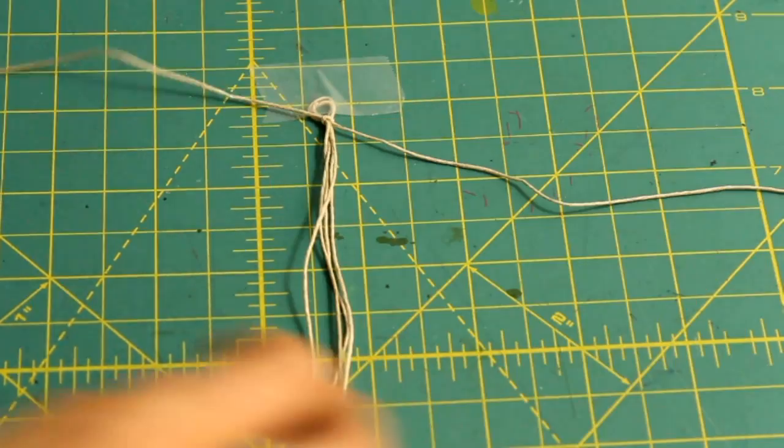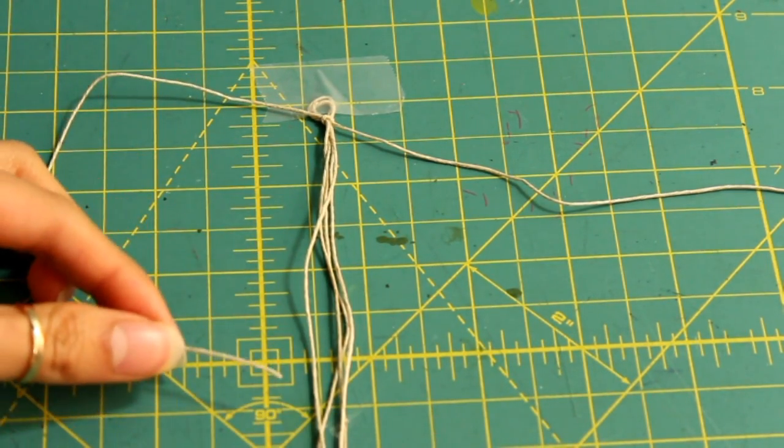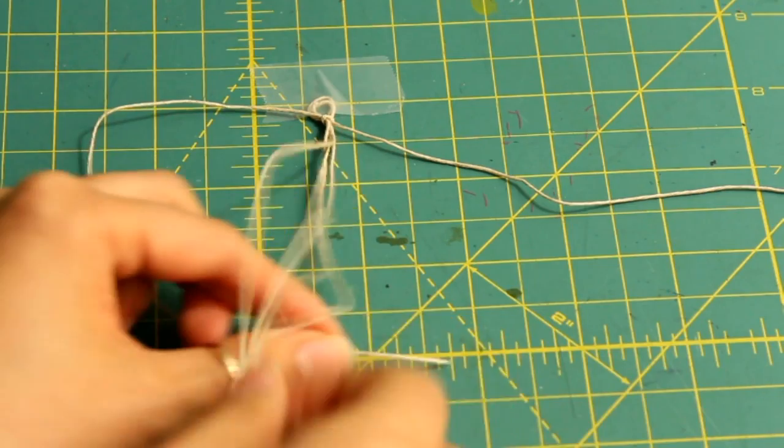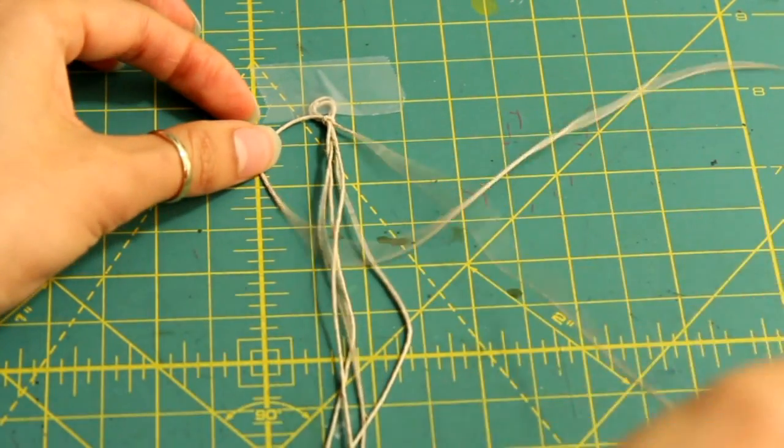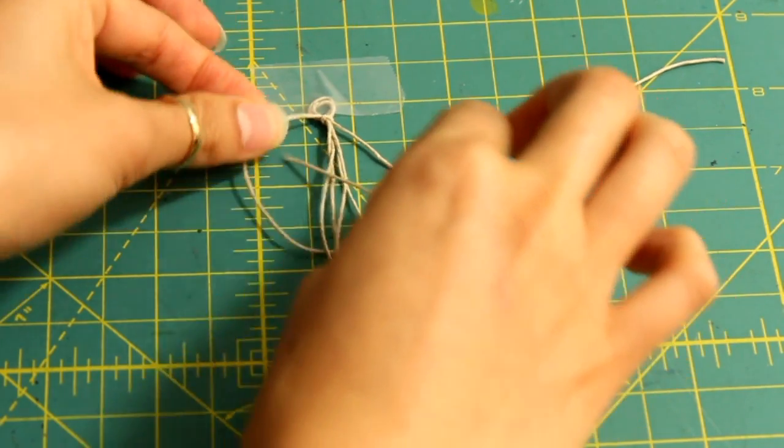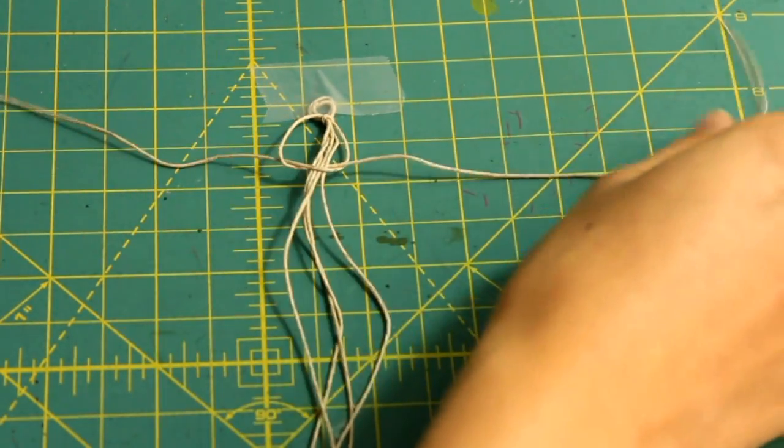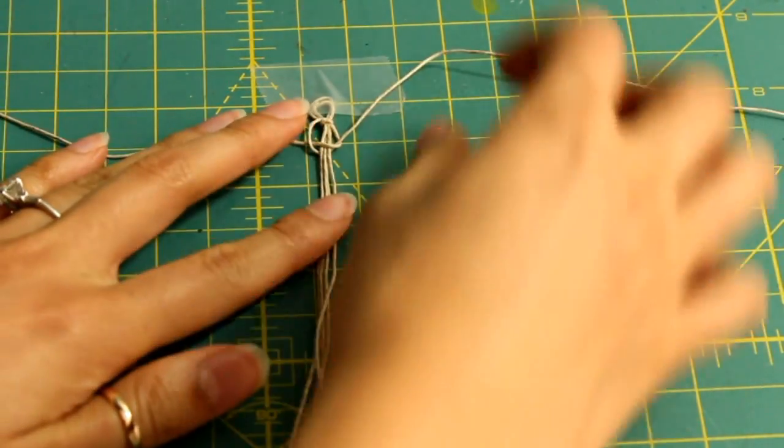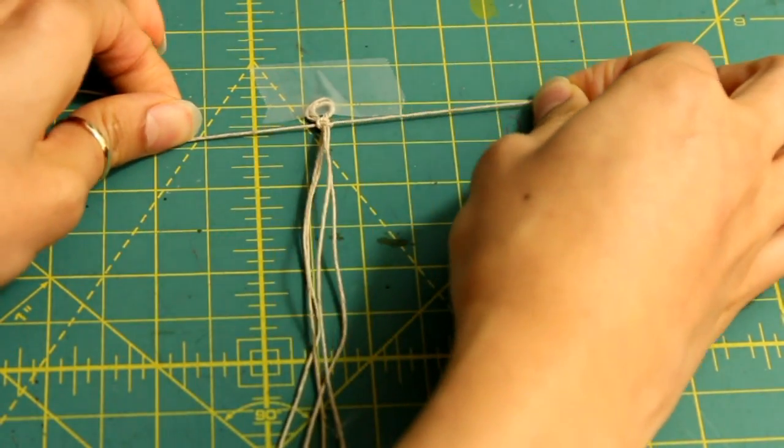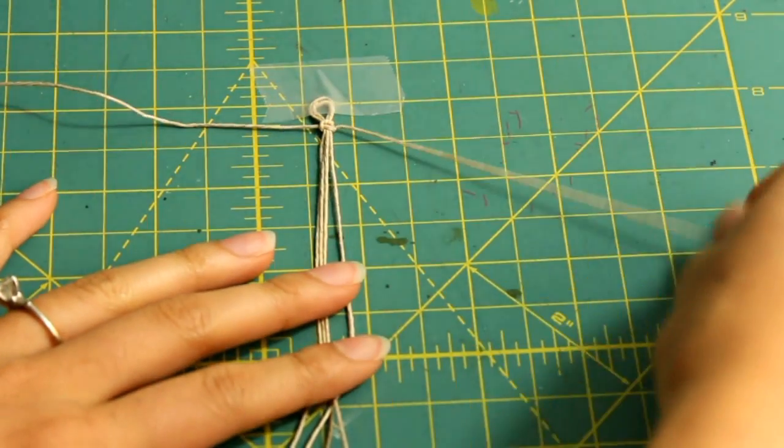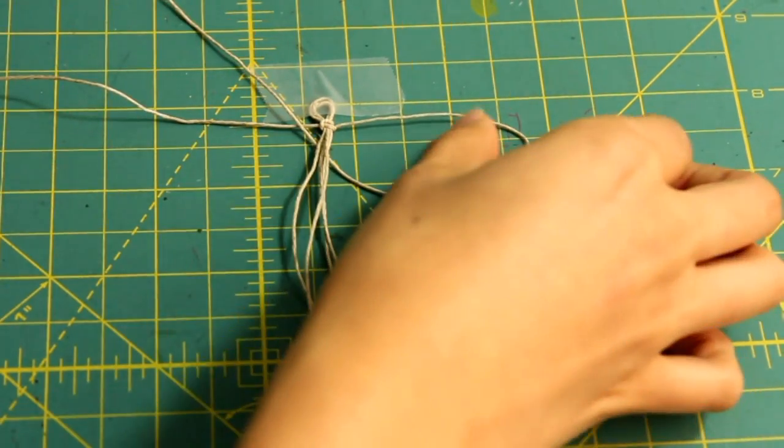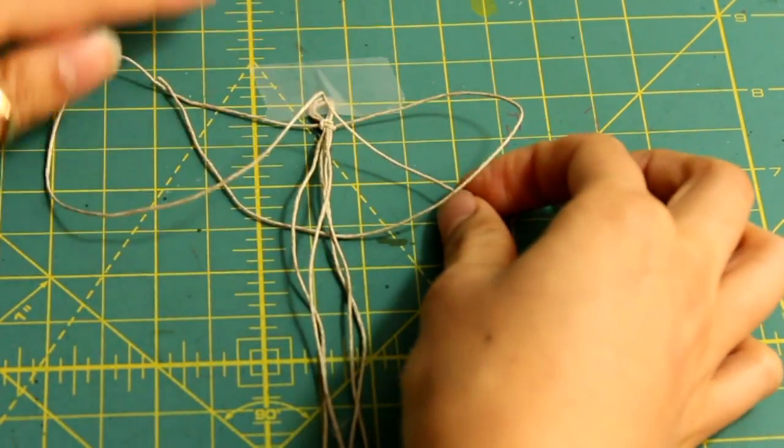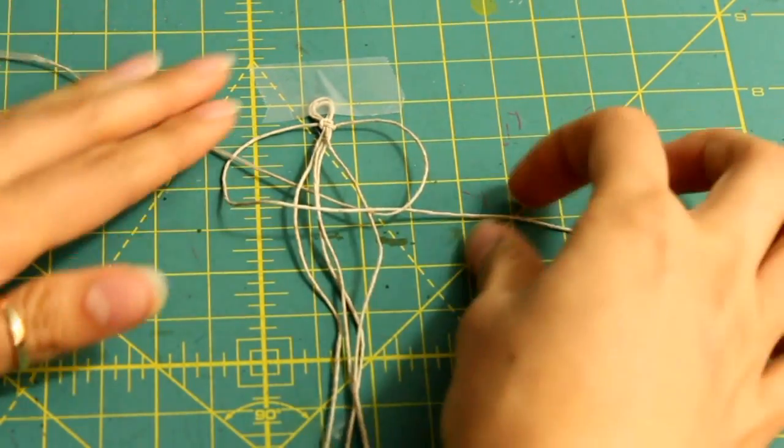Now, the fun starts here. Take the left strand, place it under the middle strand and then over the right. Now take the right strand over the middle and then under the left and pull.